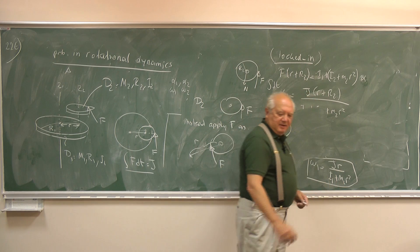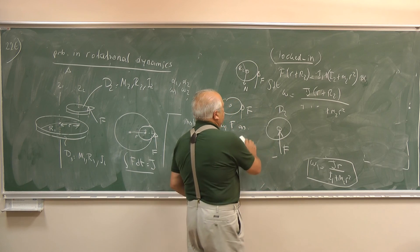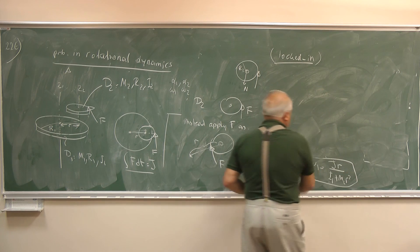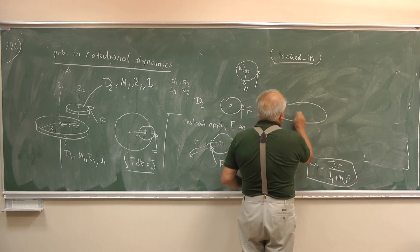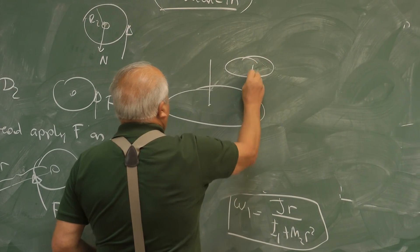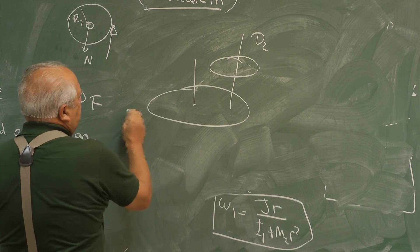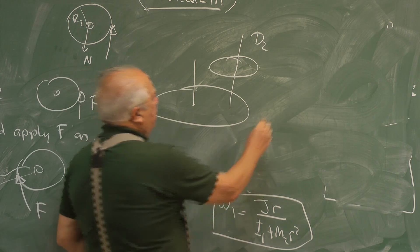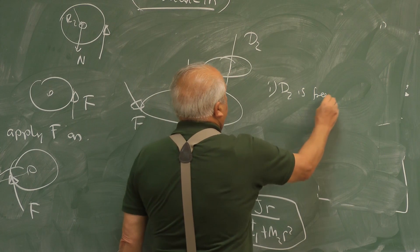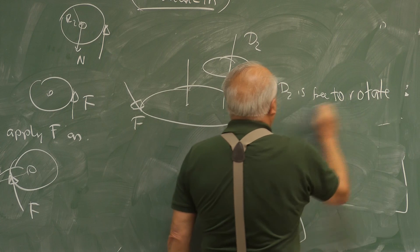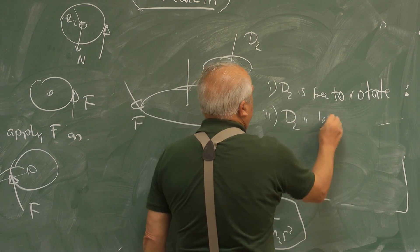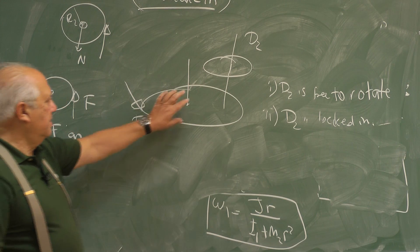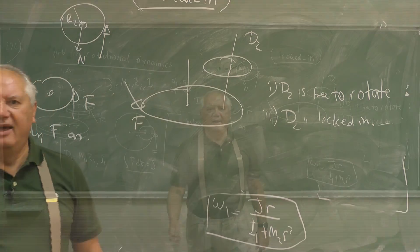I leave it to students a small extension of this problem. I will not solve it, but I will just state the problem. Here is this thing. D2. So this time apply the force on the big disk, F. And study it for both cases. One, D2 is free to rotate. Two, D2 is locked in. Find out the angular velocities of the big disk D1 and the small disk D2. That's it.